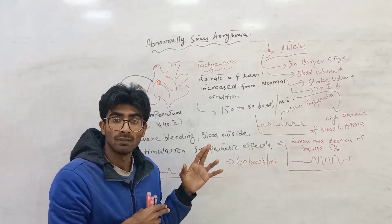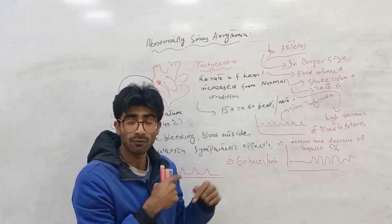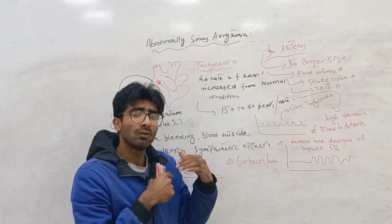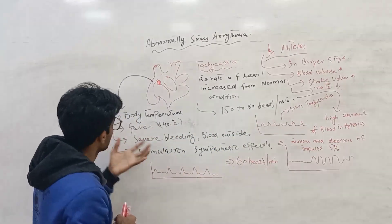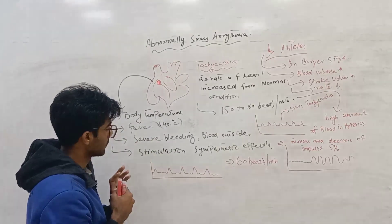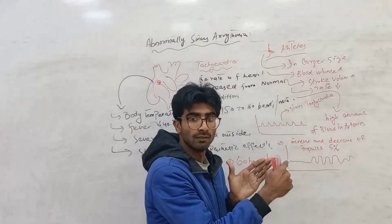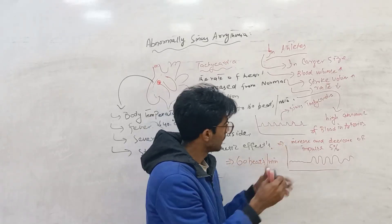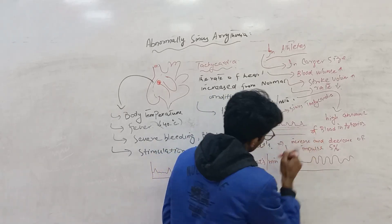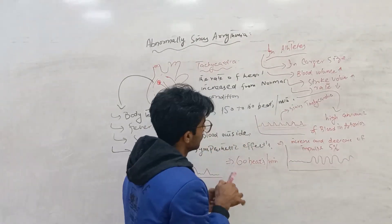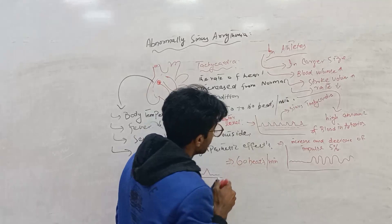In abnormal sinus conditions, we have bradycardia and tachycardia. In sinus tachycardia, the rate of heart increases approximately 100 beats per minute, going up to 150 to 160 beats per minute due to fever, severe bleeding, and increased body temperature. In sinus tachycardia, when the impulse is produced faster, it produces in a higher level — the action potential is produced in greater amount.